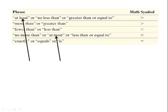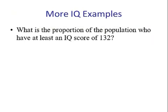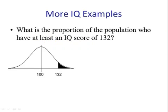Let's try some examples. What is the proportion of the population who have at least an IQ score of 132? The first thing that we need to realize is at least means greater than. So we draw our picture. The mean is 100. Here we have our x, 132, and at least means greater than.